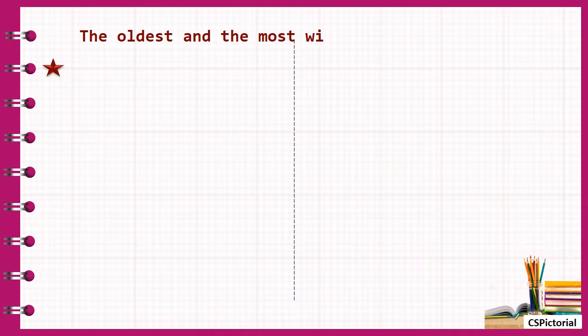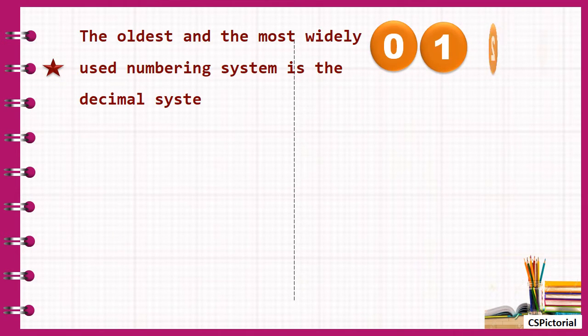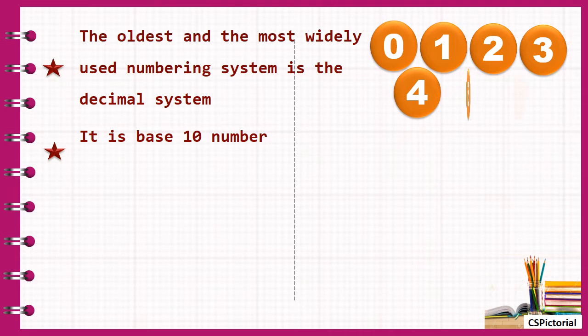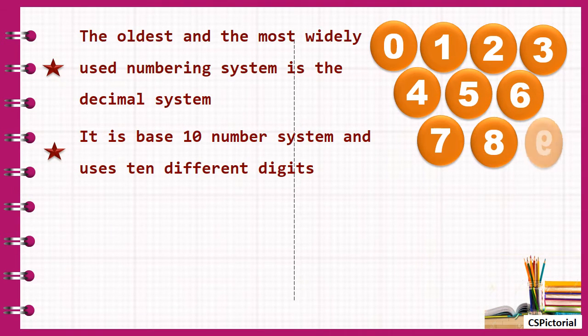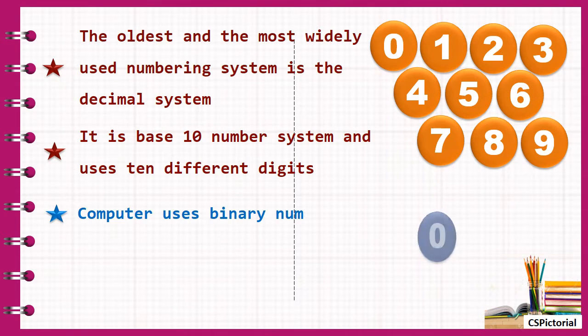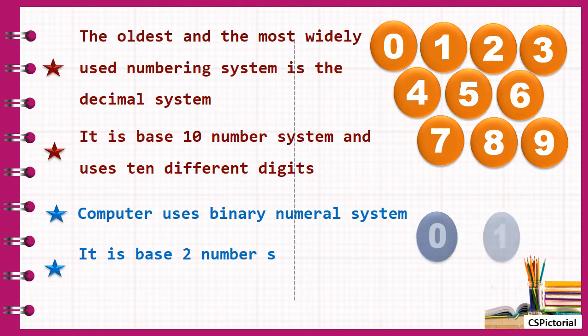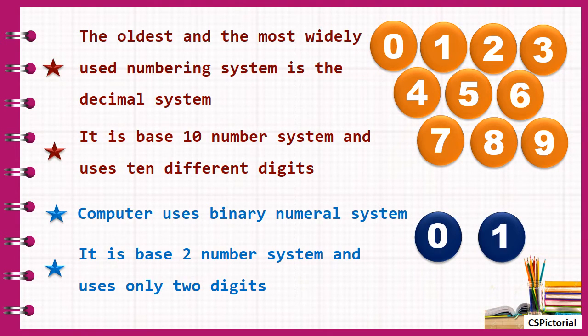The number system we usually use is the traditional decimal number system. It is also called the base 10 number system as it uses 10 different digits from 0 to 9. The number system that computers use is the base 2 number system which uses only 2 digits 0 and 1. That is why it is called binary.